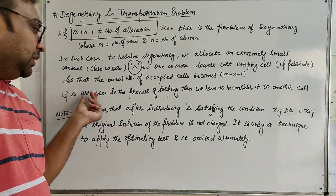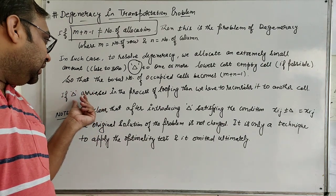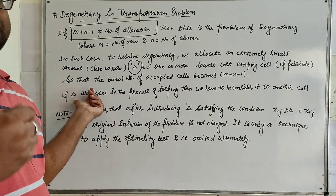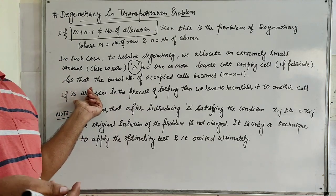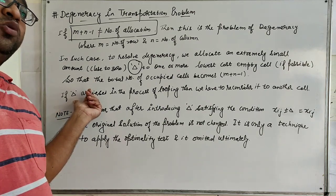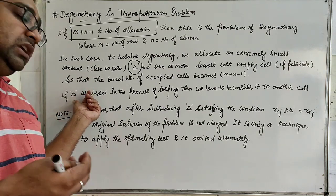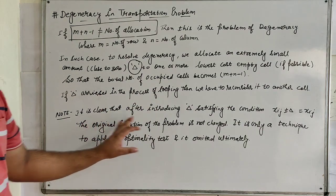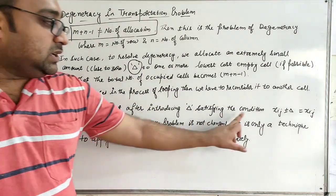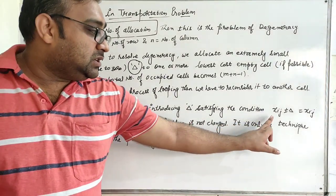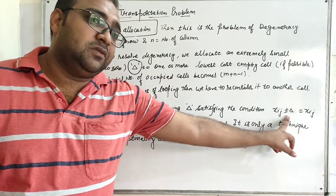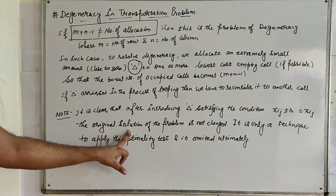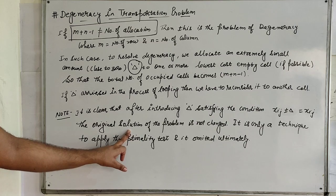It means that after introducing delta, the condition X_ij plus or minus delta equals X_ij is satisfied, so the original solution of the problem is not changed.